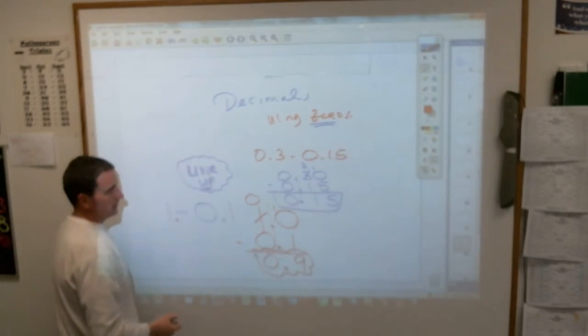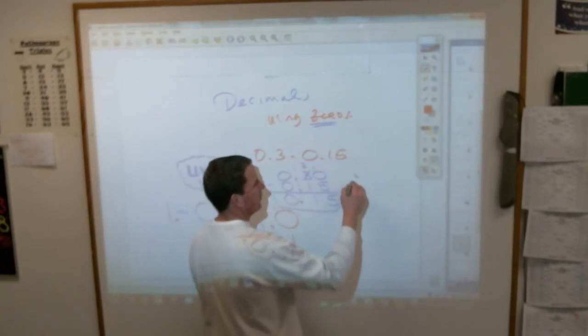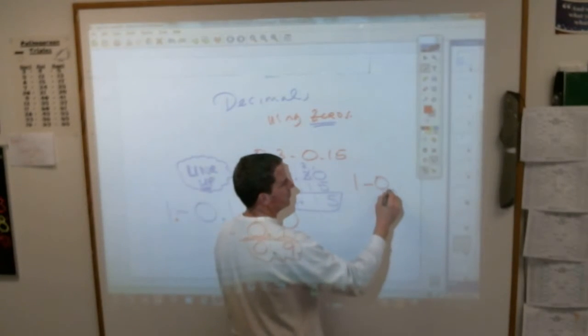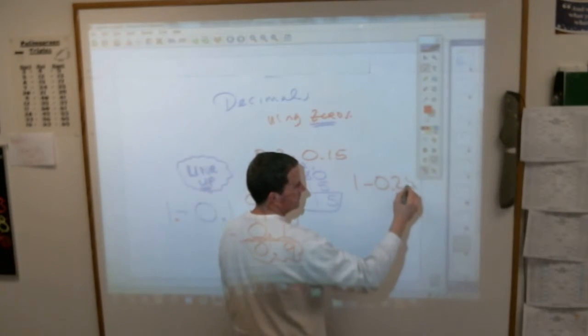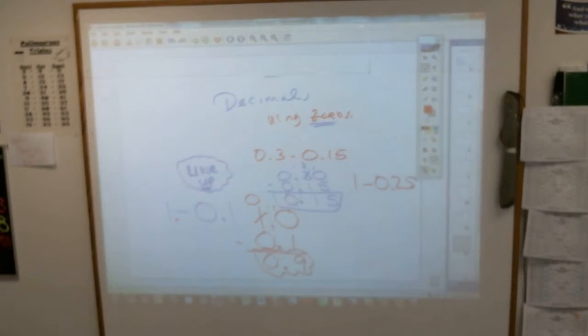Are we good with that? Yep. Let me give you one. If we all get it, we'll be good to go. How about this? 1 minus 0.25. Let's see if you can get that one correct.